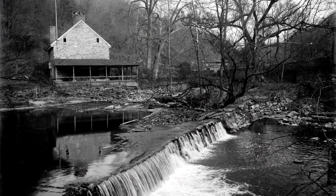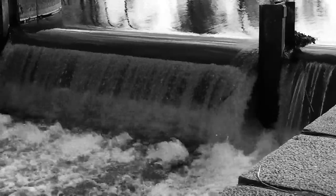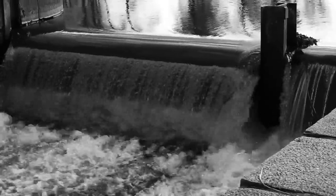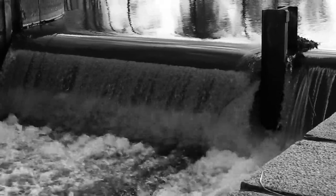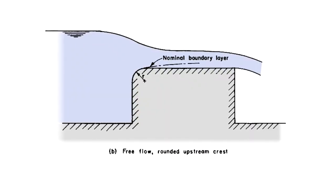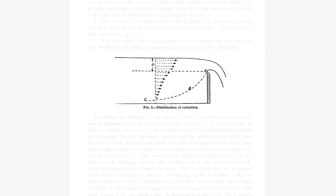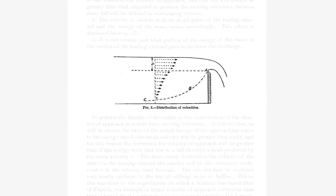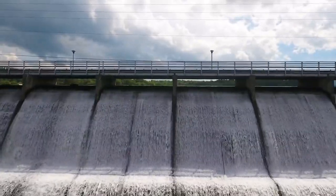A weir is a small dam built across a river to control the upstream water level. Weirs have been used for ages to control the flow of water in streams, rivers, and other water bodies. Unlike large dams, which create reservoirs, the goal of building a weir across a river isn't to create storage, but only to gain some control over the water level. Over time, the term weir has taken on a more general definition in engineering to apply to any hydraulic control structure that allows water to flow over its top, often called its crest. In fact, the spillways of many large dams use weirs as control structures.